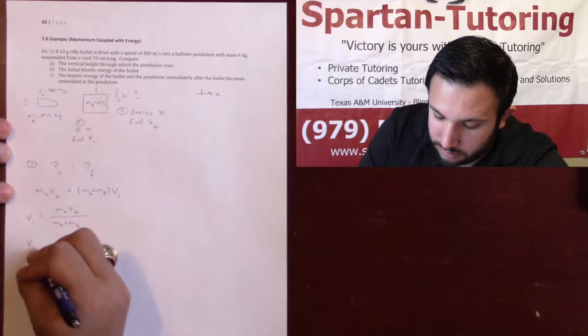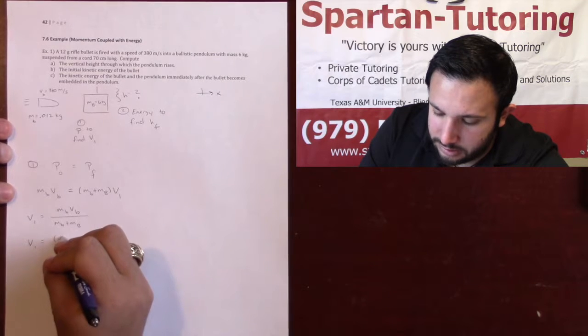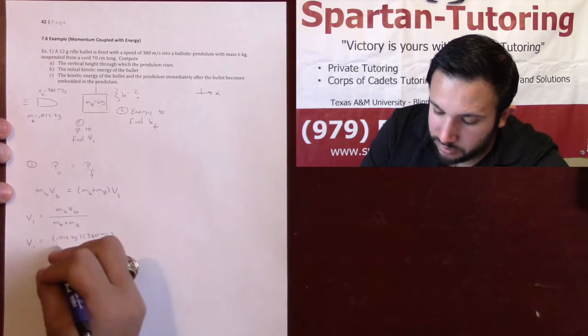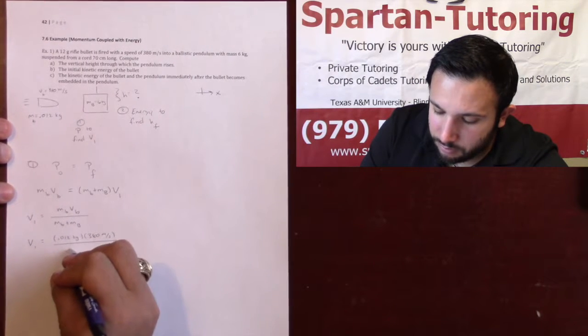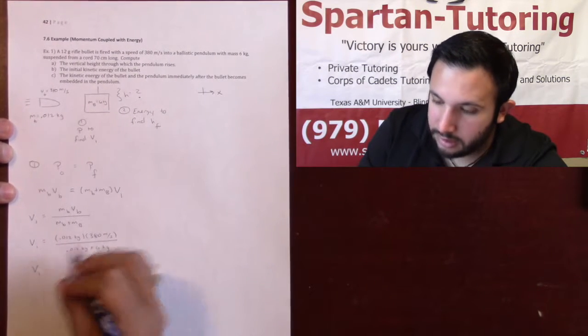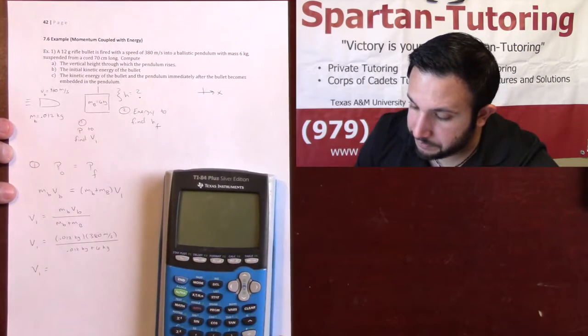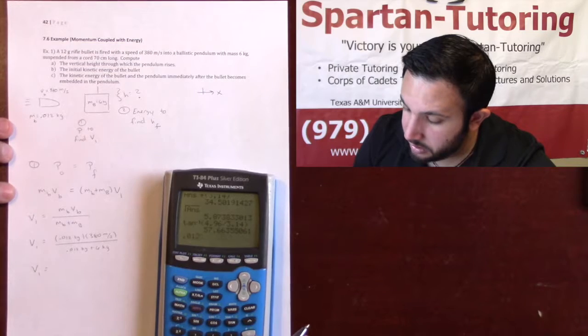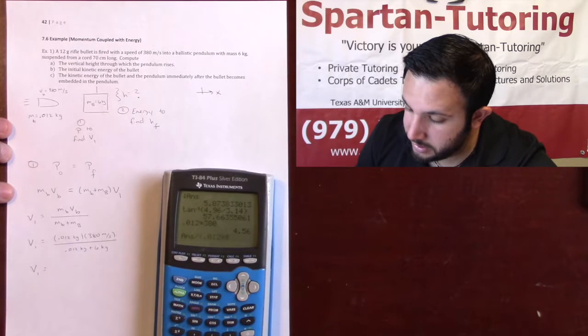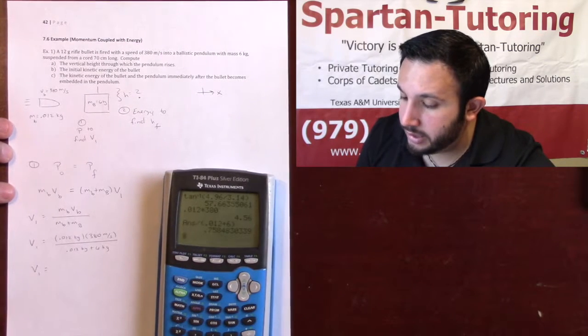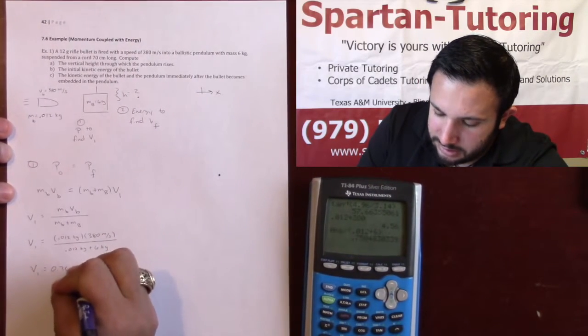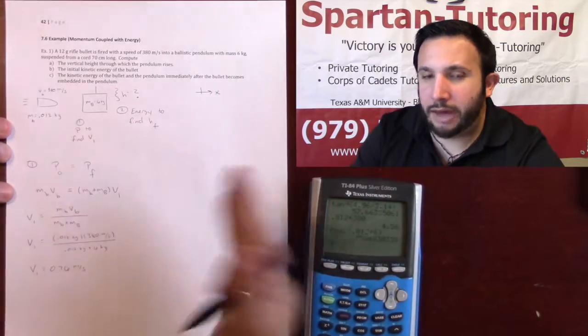Which, put it in our numbers. This is 0.012 kilograms times the 380 meters per second, divided by the combined masses of 0.012 kilograms plus 6 kilograms. And so what I get for v1, throw that in the calculator. We're going to go 0.012 times 380, divided by, and we'll go 0.012 plus 6. And what we get is 0.76. So it's now moving 0.76 meters per second immediately after the collision.